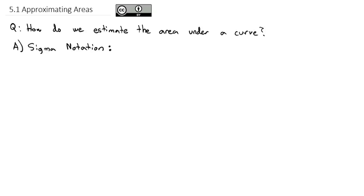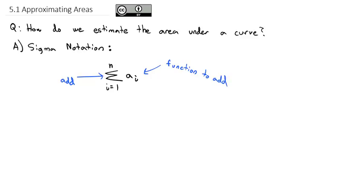In sigma notation, you're going to see something that looks like a funky letter E — it's actually the Greek letter sigma, a capital sigma. You'll usually see something like i goes from 1 to n of some expression, maybe a sub i. The sigma says we are going to add a bunch of things together. The variable i is going to keep changing, starting at the bottom number and ending at the top number.